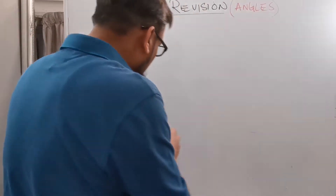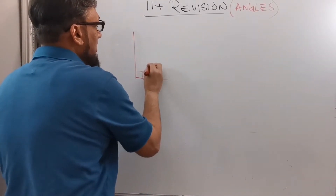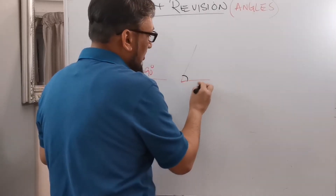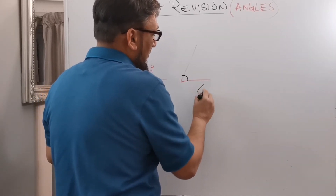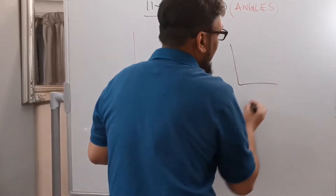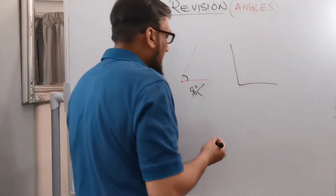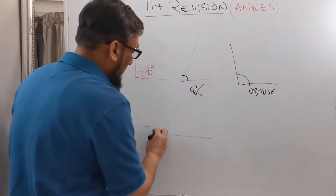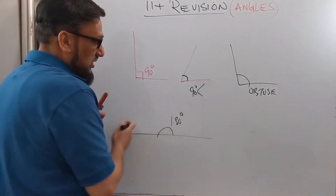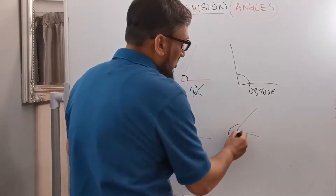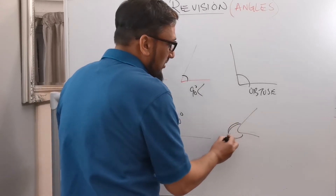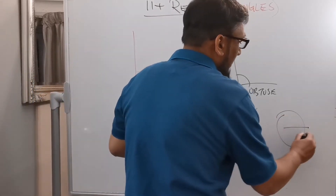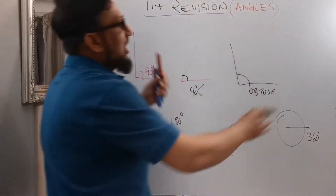There are many types of angles. A right angle is 90 degrees. An acute angle is less than 90 degrees. An obtuse angle is more than 90 degrees and less than 180 degrees. A straight angle is 180 degrees. A reflex angle is more than 180 degrees. And the full rotation angle is 360 degrees. These are the types of angles.